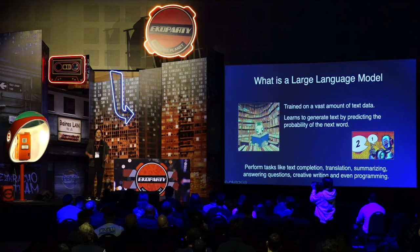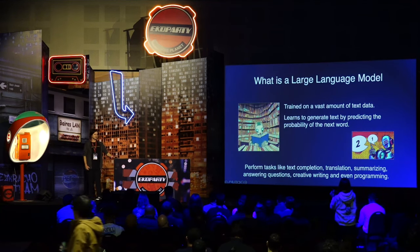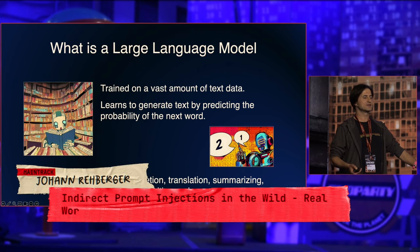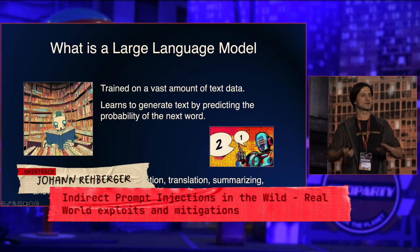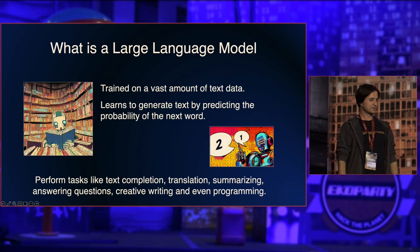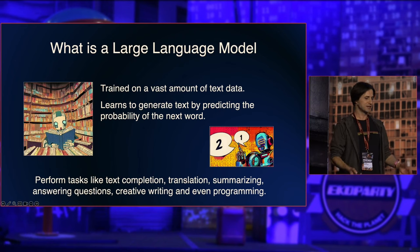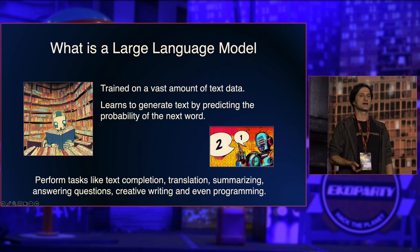What is a large language model? It's trained on a vast amount of data, and it was designed to predict the probability of the next word in a sequence of words. If you have half a sentence, it will predict what the next word would be. It turns out this is extremely useful for summarization, text completion, code generation, and things along those lines.